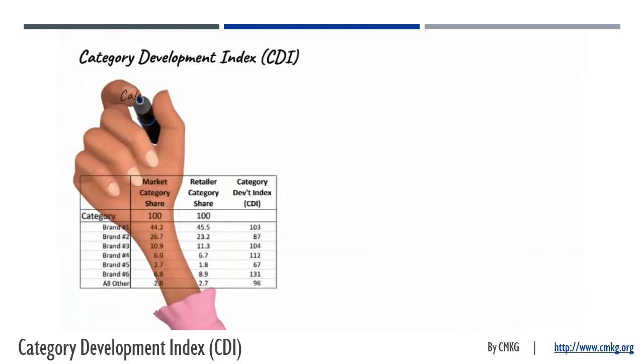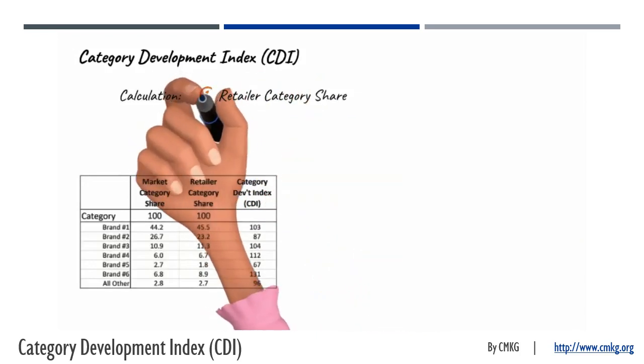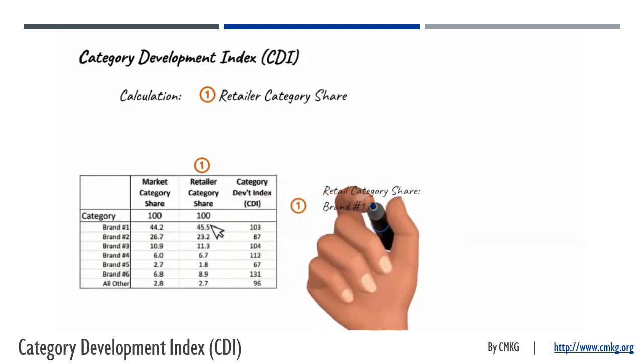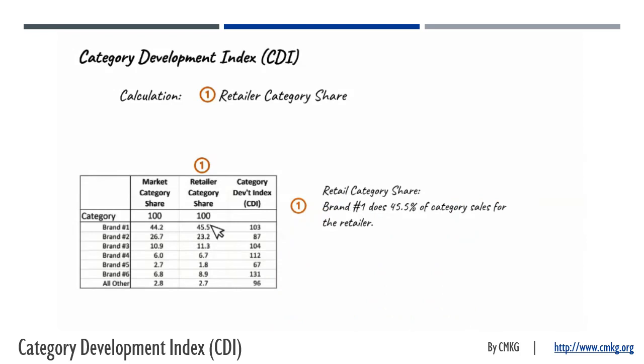The calculation for CDI starts with the retail category share, which for brand number one is 45.5. In other words, brand number one does 45.5% of the category sales for the retailer.